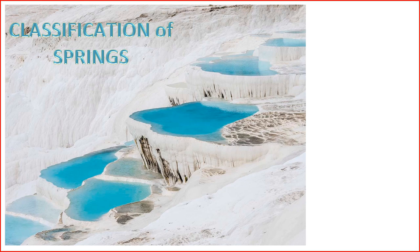3. Cold Springs — cold springs are characterized by the emergence of cool or cold water. The temperature is influenced by factors such as the depth of the groundwater source and the geological conditions. 4. Hot Springs — hot springs feature water with elevated temperatures compared to the surrounding air. The heat is often derived from geothermal energy, and hot springs are common in volcanic or geothermally active regions. 5. Intermittent Springs — intermittent springs have a variable flow and may stop flowing during certain periods, such as dry seasons. The flow is influenced by factors like rainfall and changes in groundwater levels.